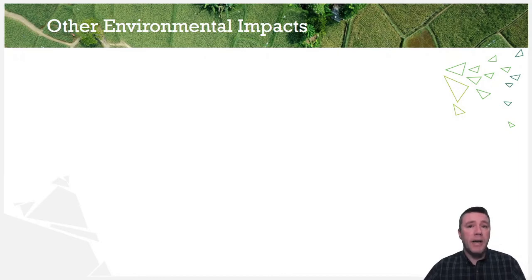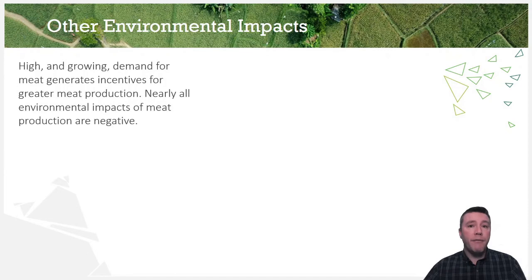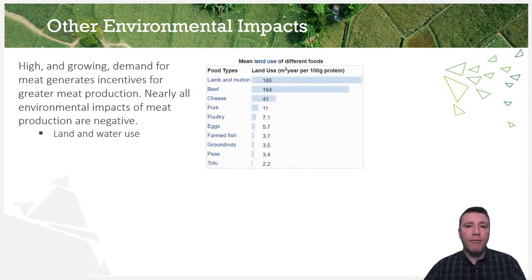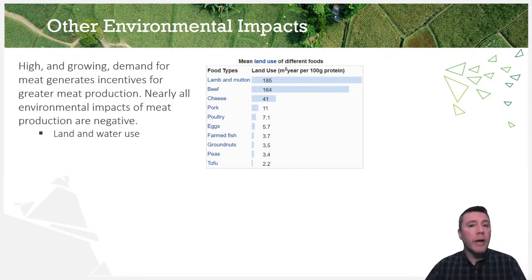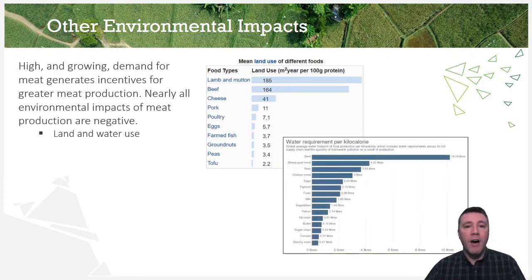It is the market's demand for meat that drives its production, and since the demand for meat is increasing, the environmental impacts of meat production are as well — and nearly all of them are negative. As illustrated by this graph, the area of land required for the production of meat is greater than for the production of most other land-based food products. In this graph, five of the top six water-demanding food products are animal or animal-based, and beef alone, per unit of food energy, requires nearly three times as much water as the next three categories combined.